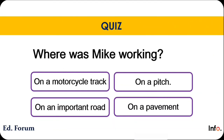Have a quiz. Where was Mike working? On a motorcycle track? On a pitch? On an important road? On a pavement? We read that he was working on a motorway — and motorway is an important road. He was not working on a motorcycle track, not on a pavement, and not on a cricket pitch. So he was working on an important road. That is the correct answer.